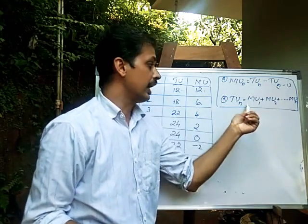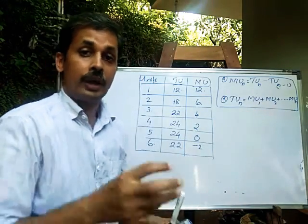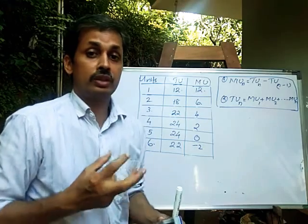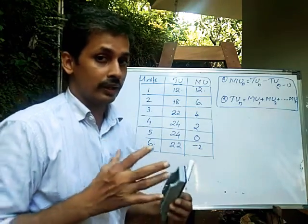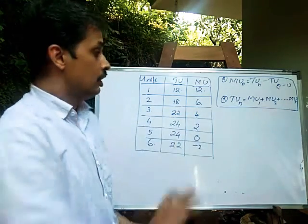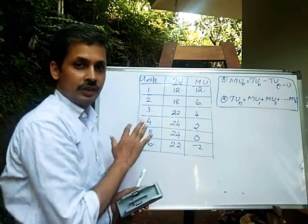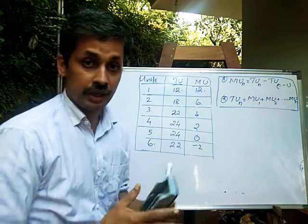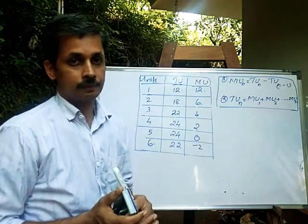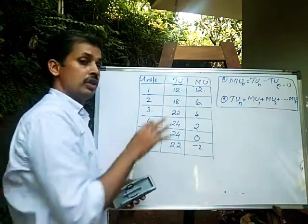So n stands for the number of units consumed. This is the relation between marginal utility and total utility. Now I am going to talk about the table again.